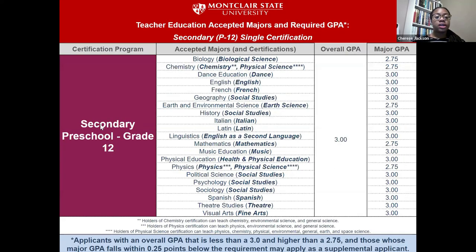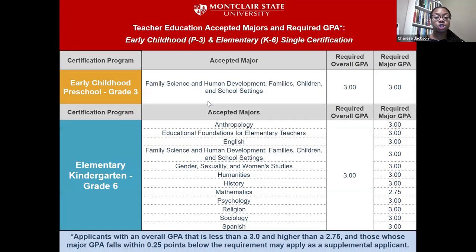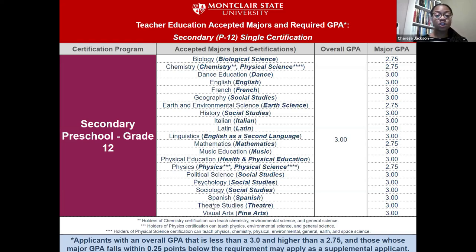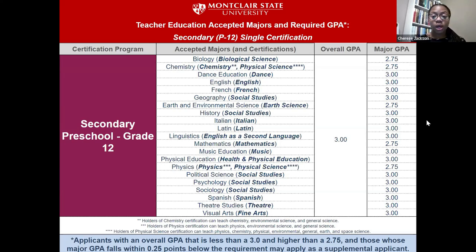For students interested in teaching preschool through grade 12, our secondary education cert, we have even more majors available, including physics, physical education, linguistics, geography, French, Spanish, theater studies, and visual arts. The overall GPA required is a 3.0, though for a few majors — biological science, mathematics, physics, and earth science — your major GPA can be as low as 2.75.